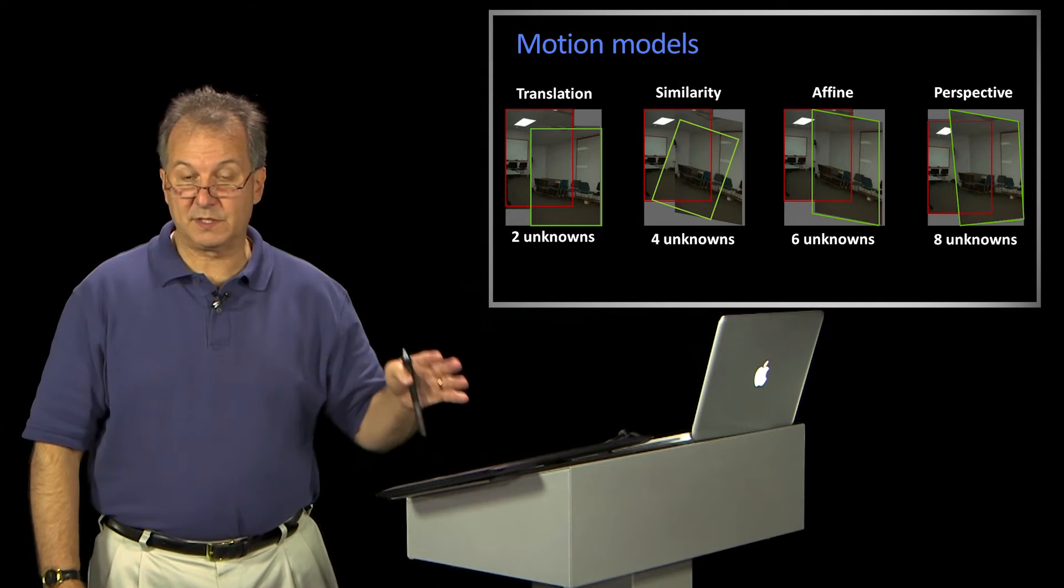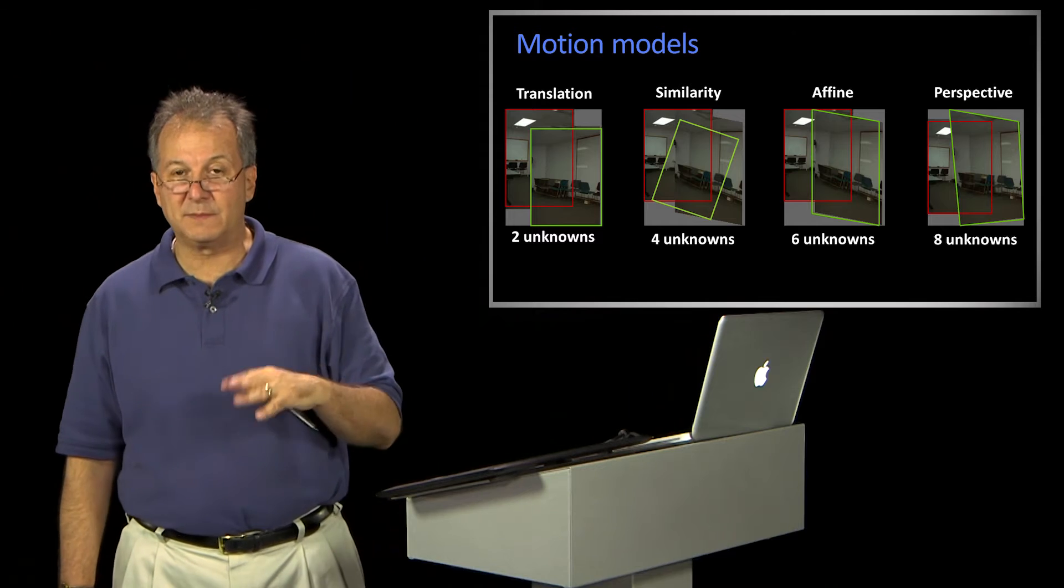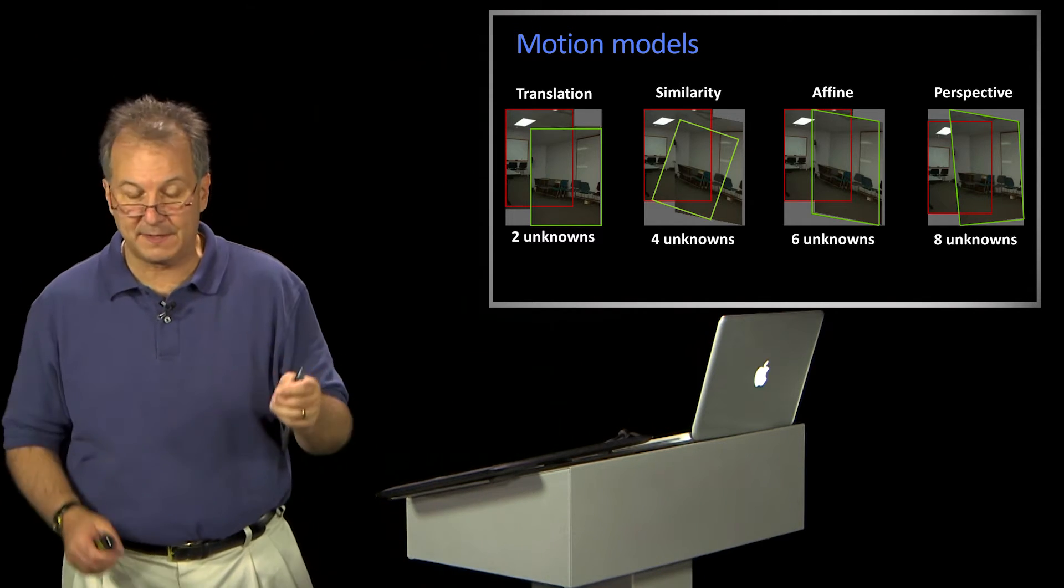So here are some examples of models, and these are the same transformations that we talked about earlier when we were talking about doing mappings for homographies and panoramas and things like that.